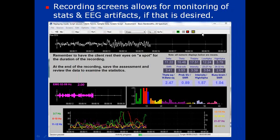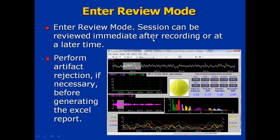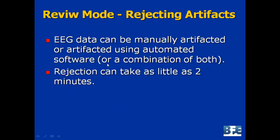You just watch for three minutes, then at the very end go into review mode — just a quick click. No screen selection is needed because it's already been predefined. From within review mode, you do artifact rejection and then generate the Excel report. You can artifact the EEG manually, automatically using the automated software, or a combination of both — it's pretty quick and takes less than two minutes. Then to generate the Excel report, go to the little printer icon in the bar — I think it's called Session Report — and choose Generate Excel Report. Your computer needs to have Microsoft Excel installed to actually generate the report.